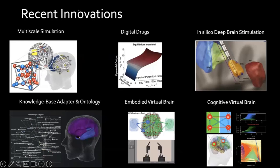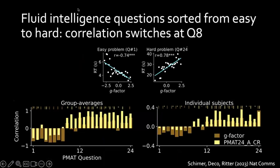Connecting the computational brain model with neuroscientific theory and knowledge integration is a key direction. One area is cognitive virtual brains where we think we made advances toward brain models with more human-like intelligence. This also touches on the AGI topic — artificial general intelligence — and whether large language models like ChatGPT really show signs of human intelligence, or whether there is more. We believe there is more.